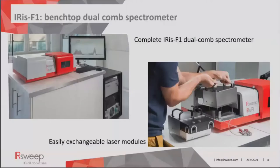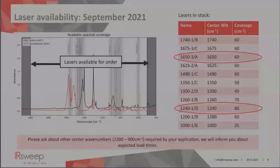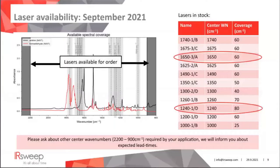One of the cornerstones of the Iris F1 is the ability to change a laser module, which can be done in 30 seconds, followed by stabilization of another 10 to 20 minutes depending on temperature changes. After that, you are ready to measure again with high time resolutions and great SNR in the microsecond time regime.